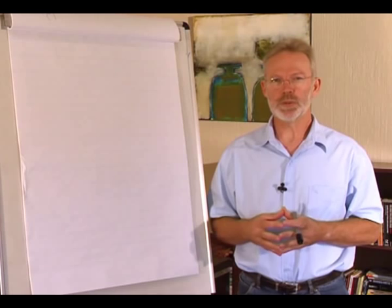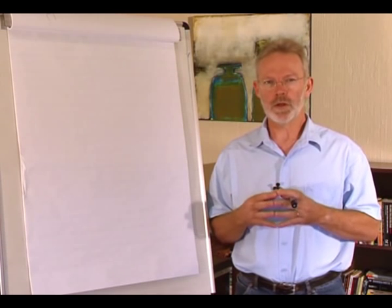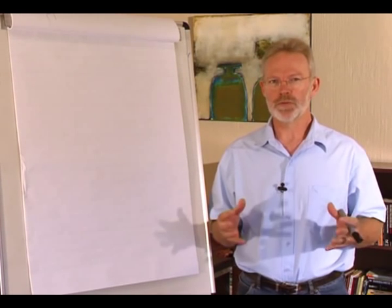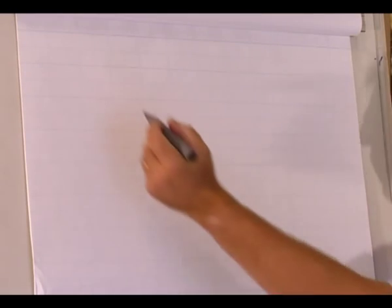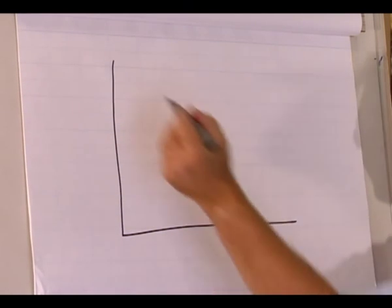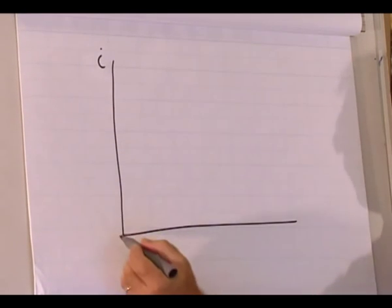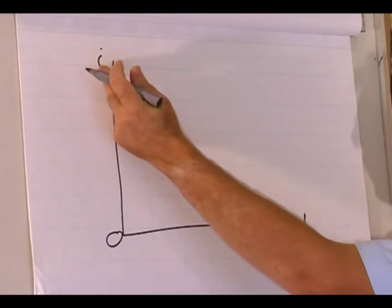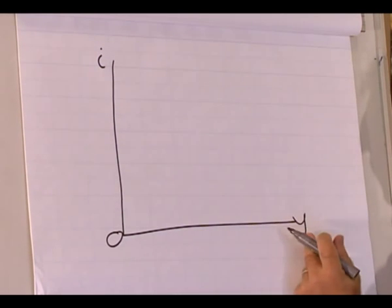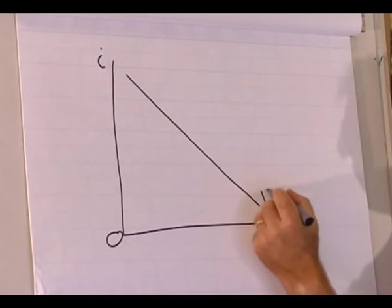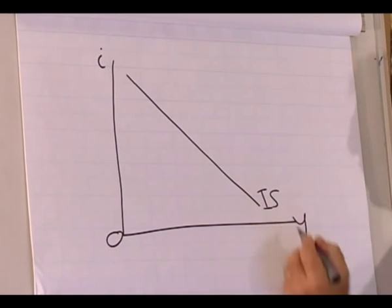We need to distinguish between a movement along the IS curve and a shift of the IS curve. Let's start by drawing the IS curve. It shows all the combinations of interest rate and production where the goods market is in equilibrium.